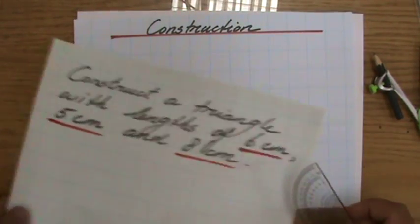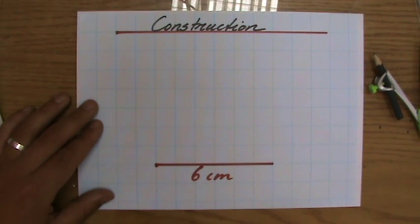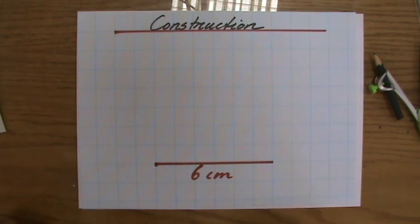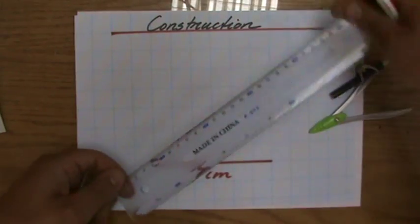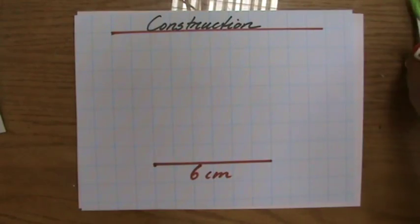So I already drew for you on this piece of paper a line of 6 centimeters. Of course I can draw that line in any direction, but let's make our lives a little bit easy and do it horizontally. 6 centimeters.